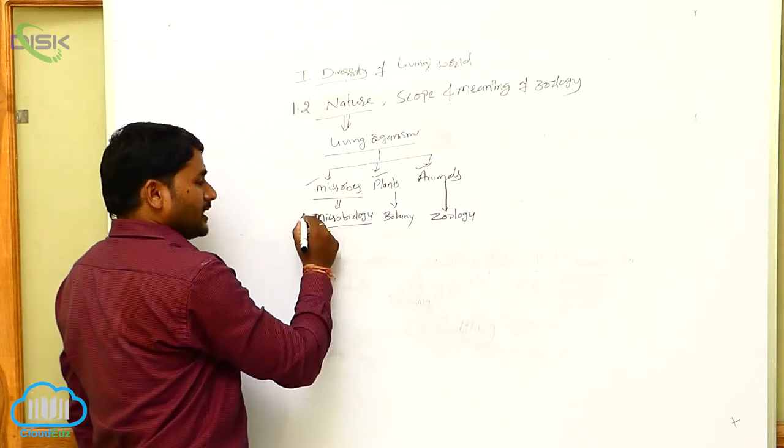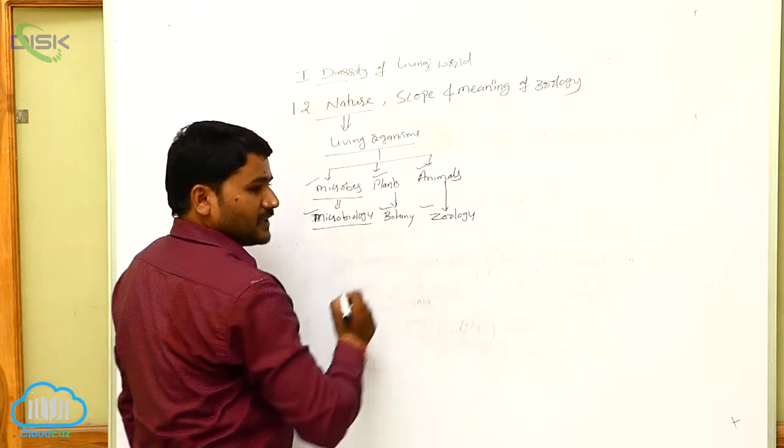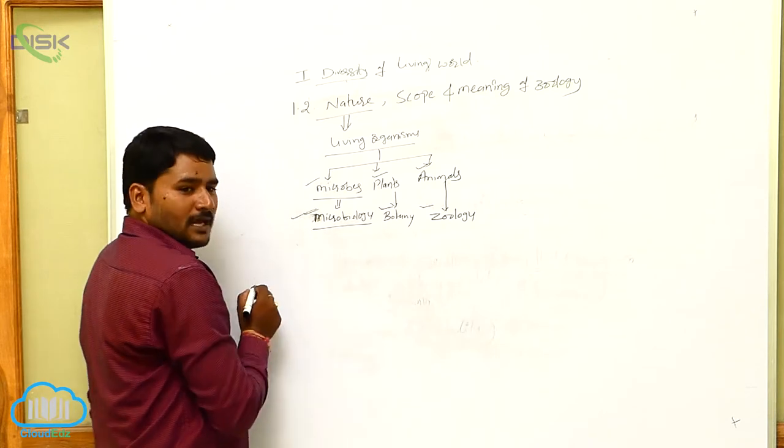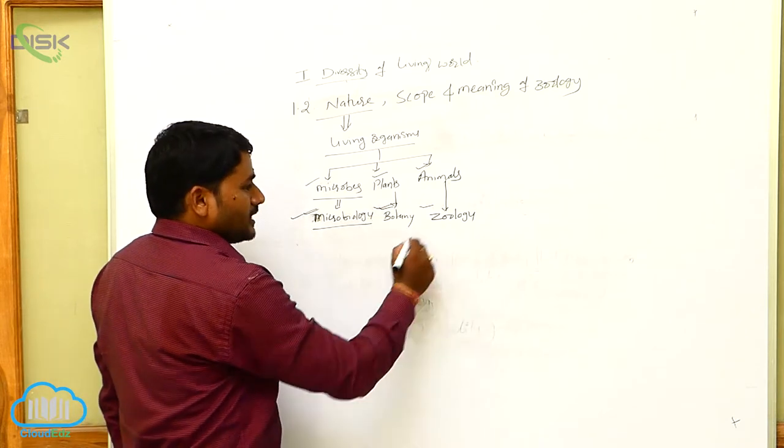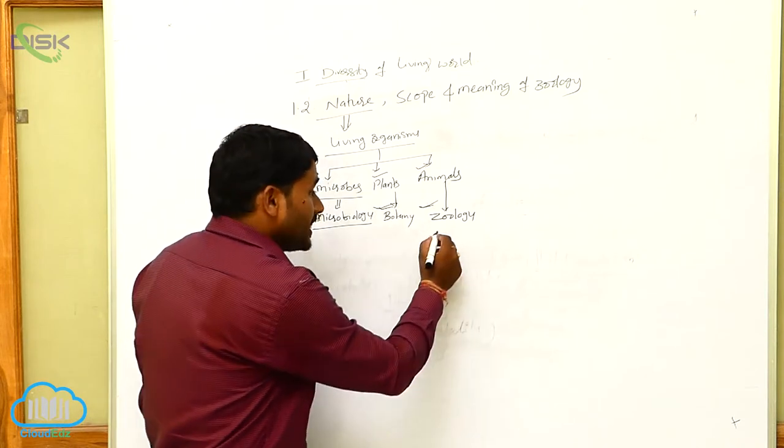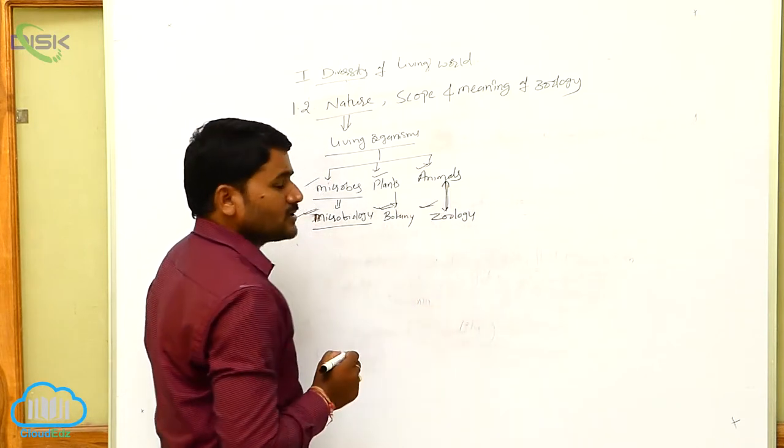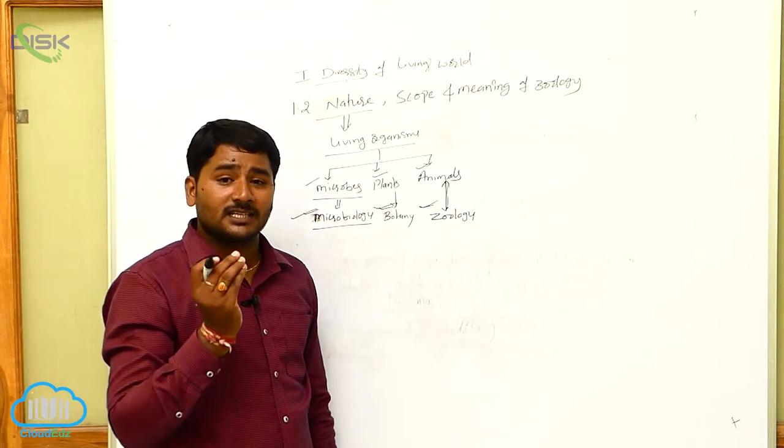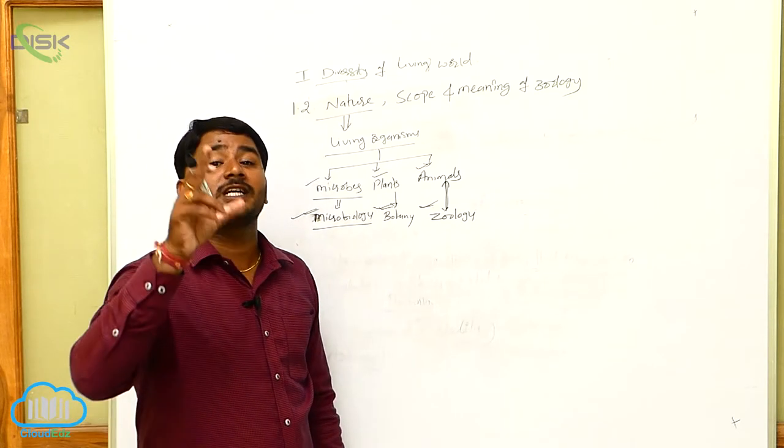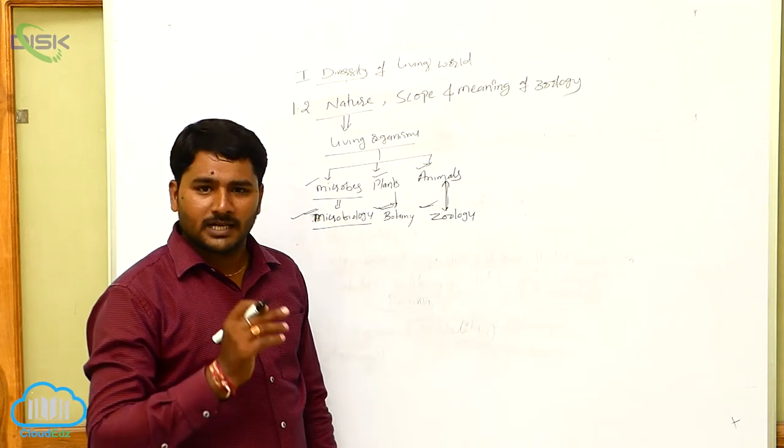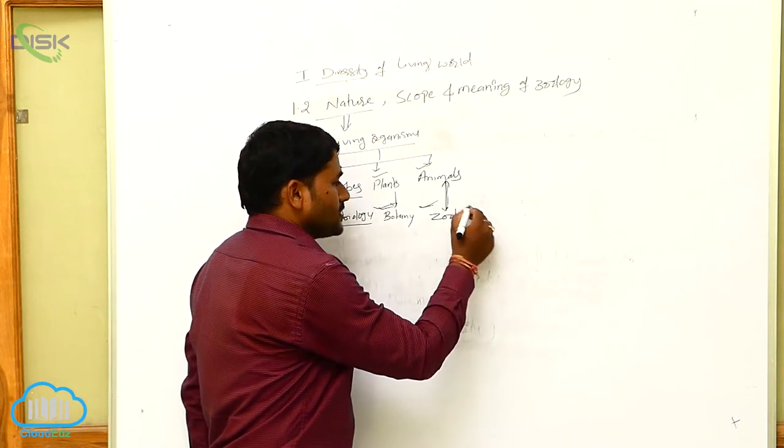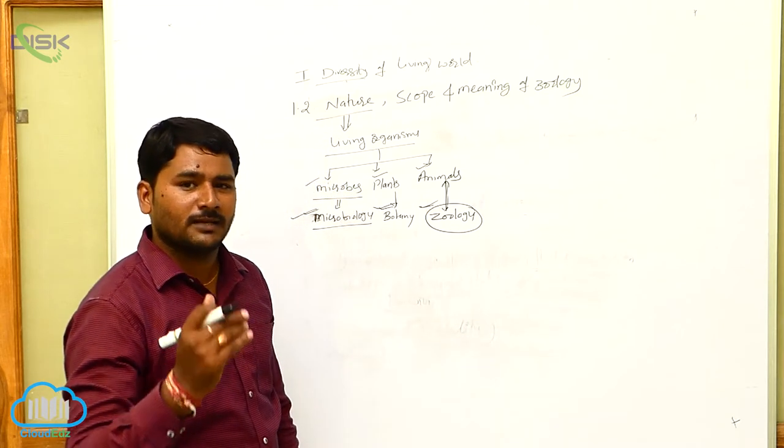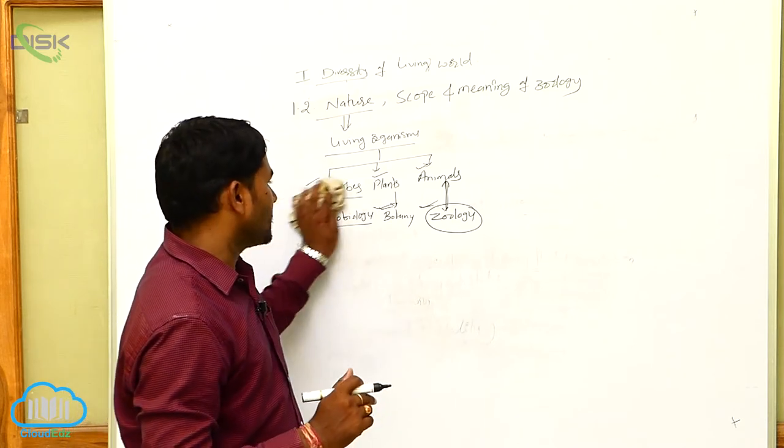So here, under the biology, three major branches are there: microbiology, botany, and zoology. So the study of animals is known as zoology. See how the study takes place? Generally, the study of animals with scientific principles is known as zoology. Zoology deals with the study of animals with scientific principles.